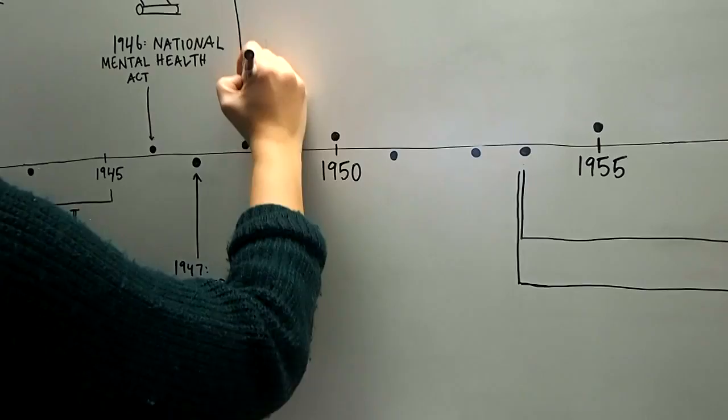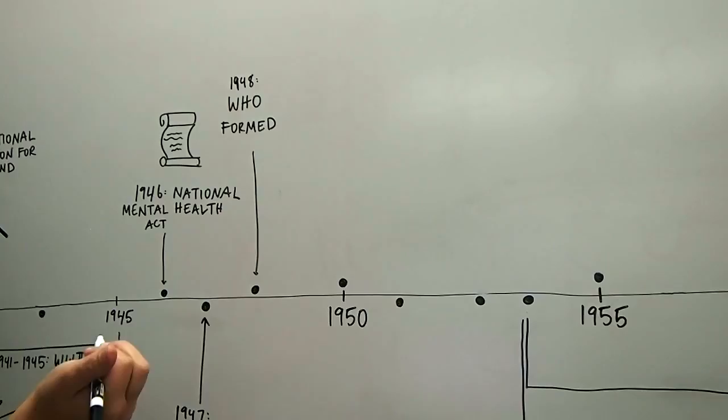In 1948, the World Health Organization was first formed in Geneva, Switzerland, by the newly created United Nations.